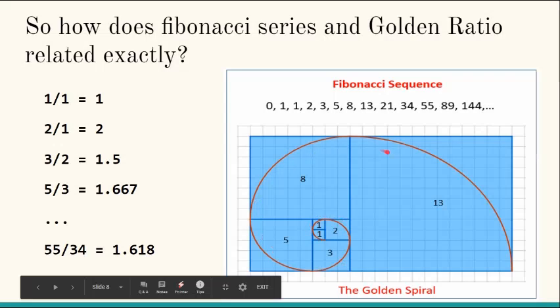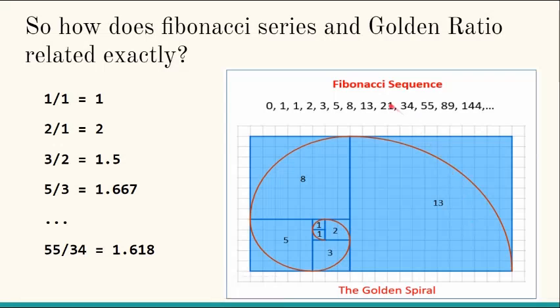And if you join them, you will get this golden ratio, this beautiful golden ratio which is followed in nature only. So this is how Fibonacci series, golden ratio, all are related to Sikkim.